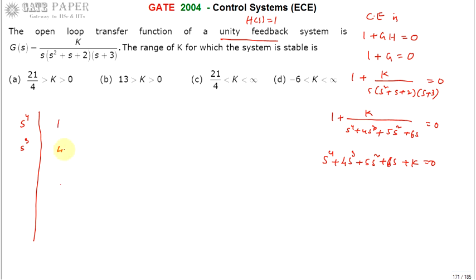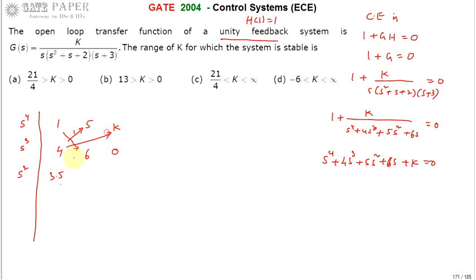Writing the coefficients: for S⁴: 1, 5, K and for S³: 4, 6. For the S² row: (4×5 − 1×6)/4 = (20 − 6)/4 = 14/4 = 3.5. Next entry: (4×K − 0×1)/4 = K.